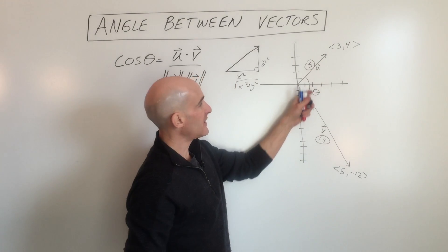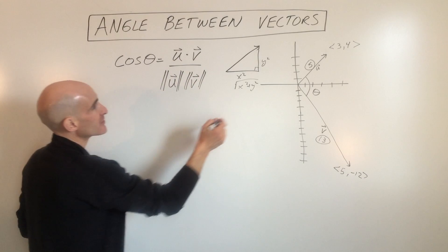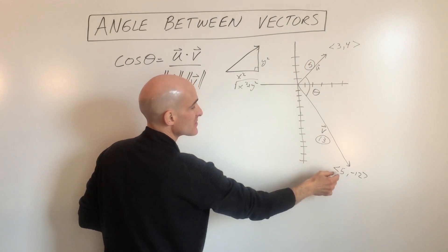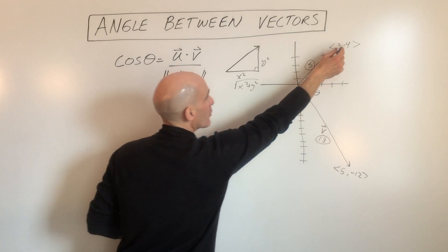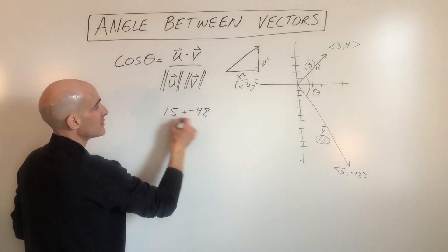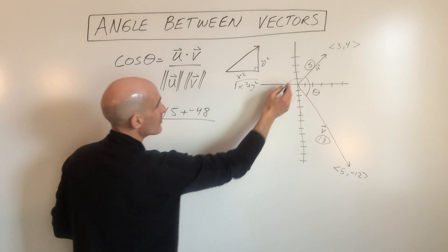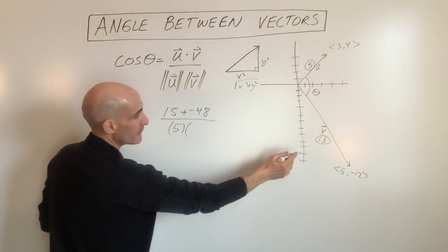We want to find the angle between the two vectors. So first step, we want to dot the two vectors. We're going to multiply the x-coordinates 3 times 5 which is 15, plus we're going to multiply the y-coordinates, that's going to be negative 48, divided by the magnitude of u which is 5 times the magnitude of v which is 13.